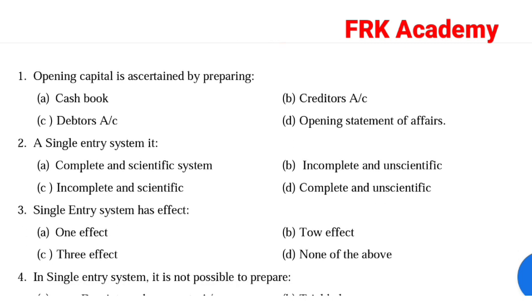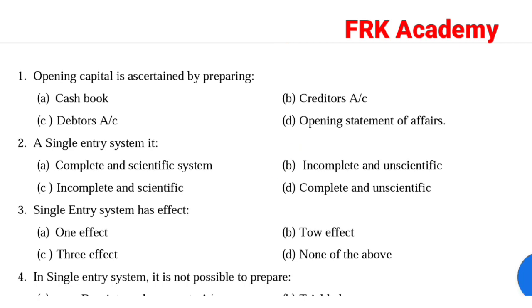Number 2: A single entry system is. Option A: complete and scientific system. Option B: incomplete and unscientific. Option C: incomplete and scientific. Option D: complete and unscientific. Answer: Option B, incomplete and unscientific.